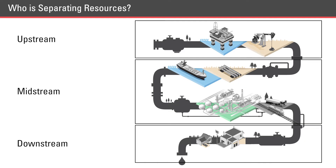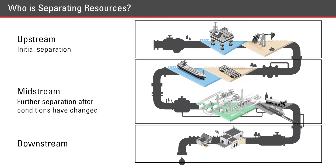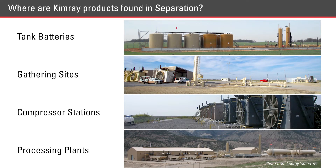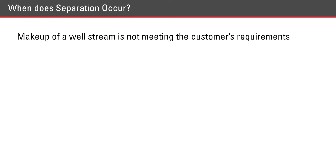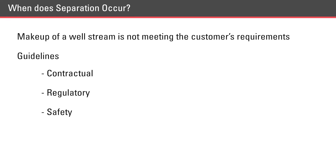All three sectors of the energy industry incorporate separation in their processes. Initial separation occurs in the upstream sector. As the resources are moved through the midstream sector and the conditions they are exposed to change, there is a need to further separate the product. Separation is also needed in the downstream sector to achieve the final product before it goes to the consumer. There are guidelines to help producers decide the extent of separation needed, which will be discussed in more detail in Level 2 separation.